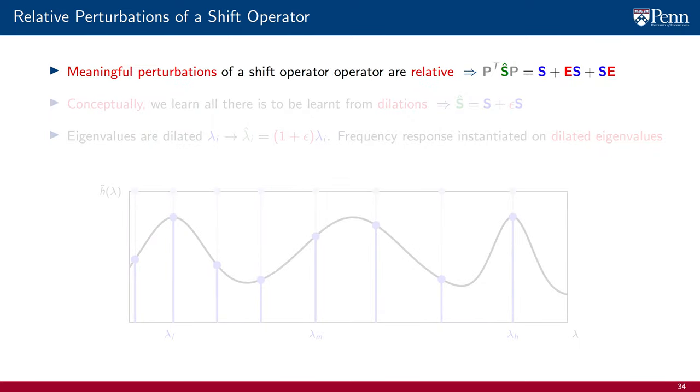In our study of perturbations, we saw that relative perturbations of graph filters are the ones that are most meaningful. We add a multiplicative error term that is symmetric and modulo permutation.